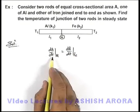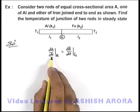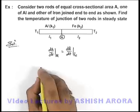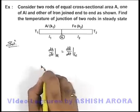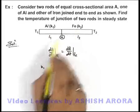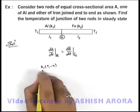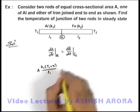So we just write down the expression for heat flow in steady state. For aluminum we can write it'll be k1—it is already given that thermal conductivities of iron and aluminum are k1 and k2—so it'll be k1 times (T1 minus x) divided by l1 into area.